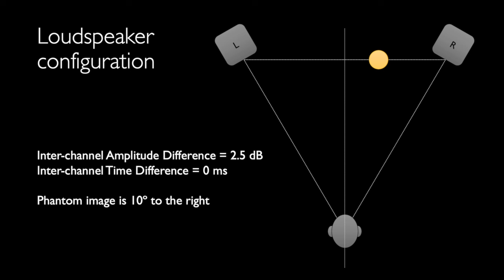An audio geek will say that my voice is now panned to the right. The word 'pan' is shortened from a device used to adjust the interchannel amplitude differences in a two-channel recording, called a panoramic potentiometer — shortened to panpot — used to pan the phantom image to the desired location.